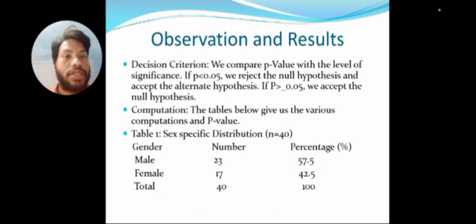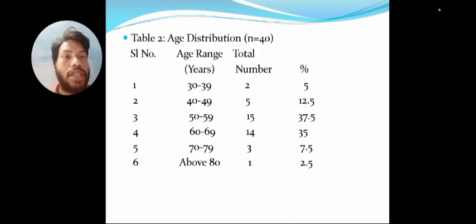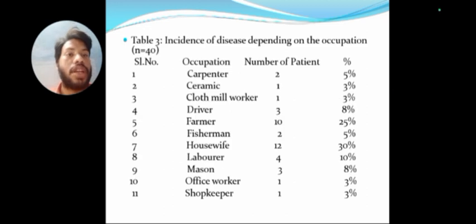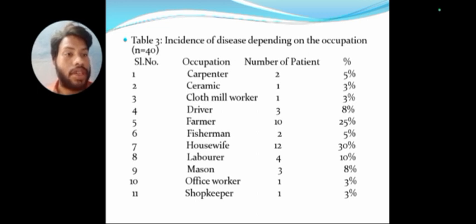Observations and results. We found that 57.5% of patients with ILD were male and 42.5% were female. In terms of age distribution, 37.5% were from the 50 to 59 age group and 35% from the 60 to 69 age group. Regarding occupation, 30% were housewives and 25% were farmers, showing higher incidence of the disease in these groups.